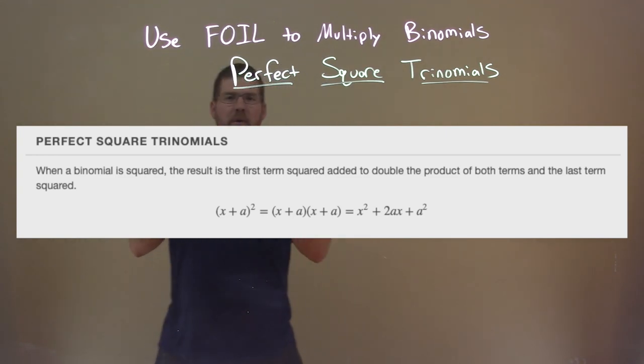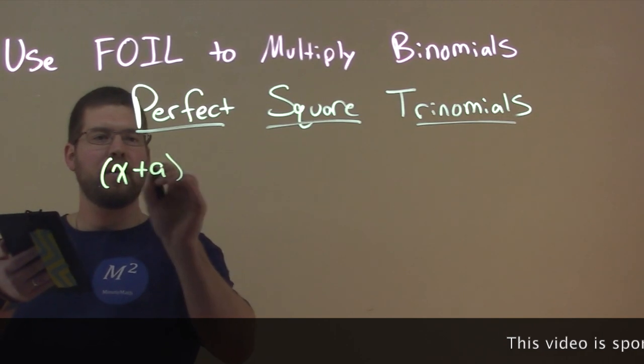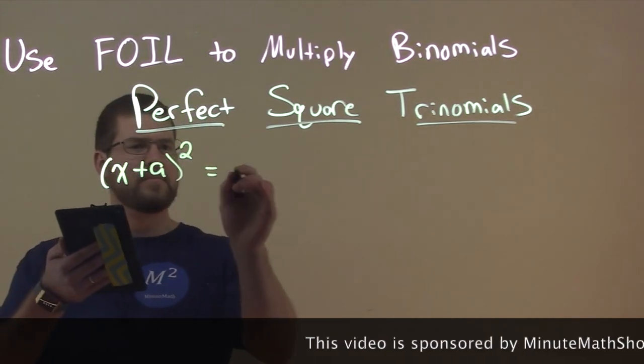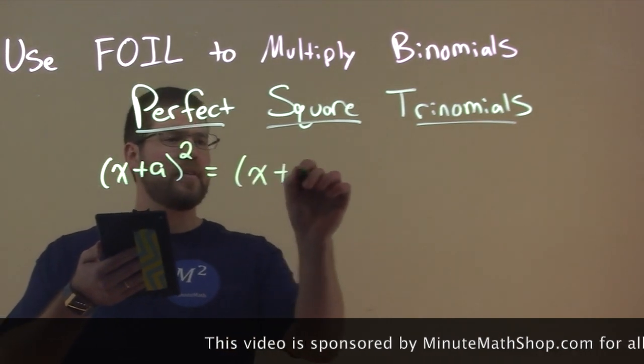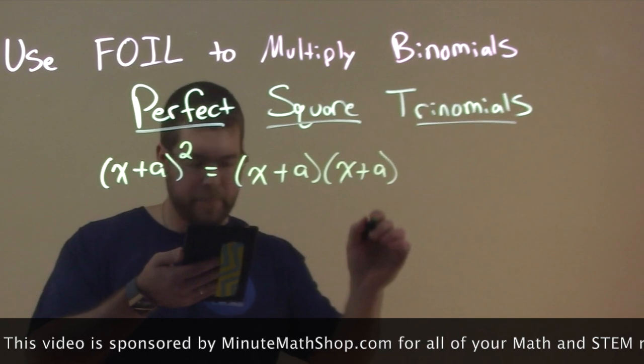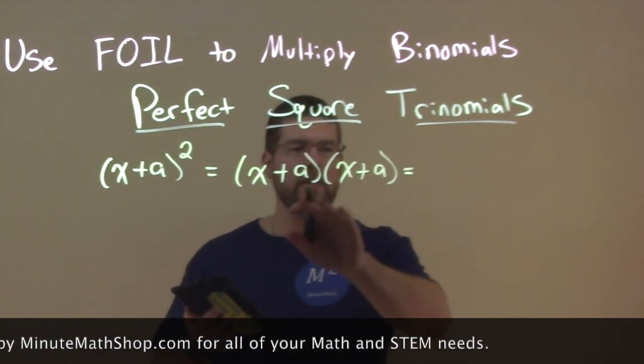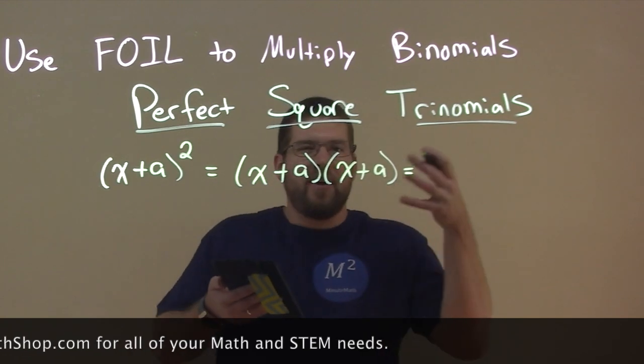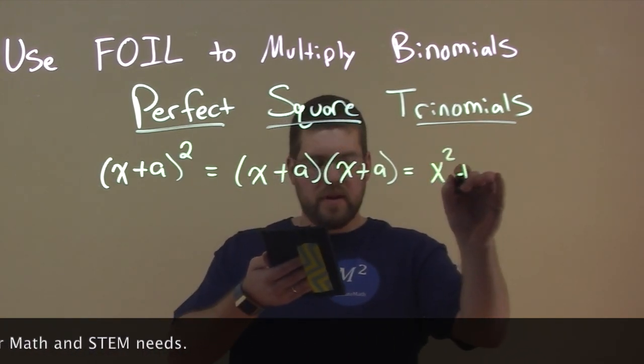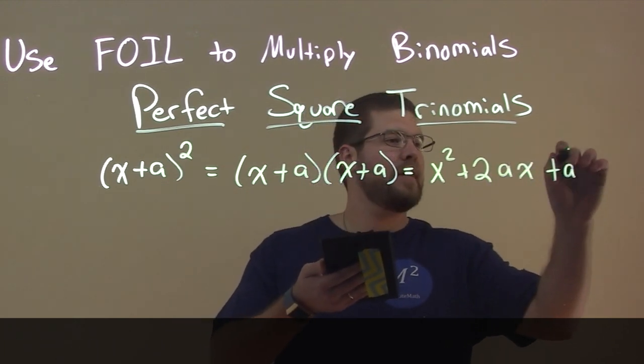It's shown as such: (x + a)² - there's our perfect square trinomial - is really (x + a) times (x + a). And we know by using FOIL and simplifying that our result will be x² + 2ax + a².